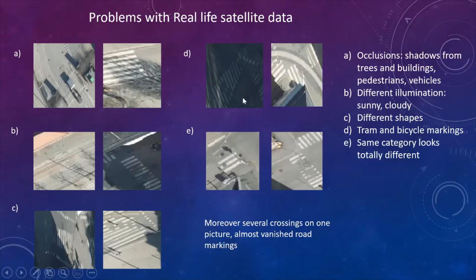Also, images had different shapes, but that is explained by the different angles from which the images were captured. Next you can see tram and bicycle markings that go through pedestrian crossings. And sometimes also the same category would look totally different. For example, here, these two road crossing markings should be of category one, but they do not look similar. That's why the problem for our developed algorithm is to categorize these two road markings into one category, and to learn the features that correspond for each class.